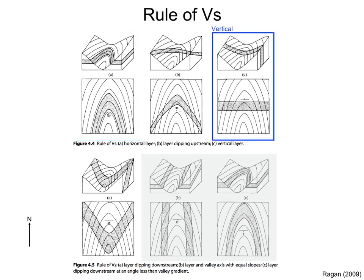Let's look now at a vertical layer. In this case, the layer cuts straight across the valley. The outcrop trace is straight and does not bend in the valley. Straight outcrop traces mean vertical layers.